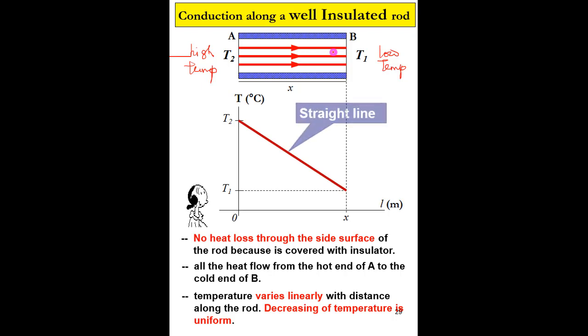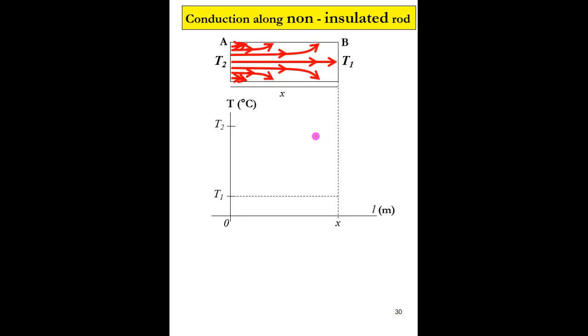So when the decrease of temperature along the rod is uniform, we get a straight line when we plot the temperature against distance graph. For a well-insulated rod, the temperature gradient will be uniform, and the temperature against distance graph will be a straight line.